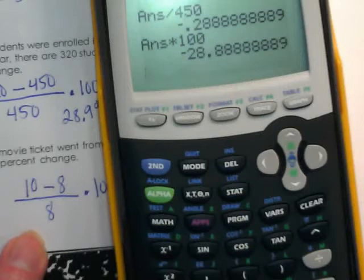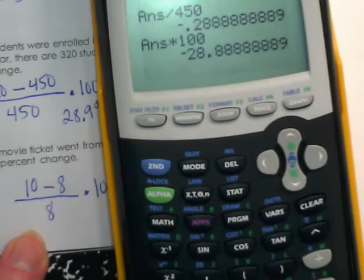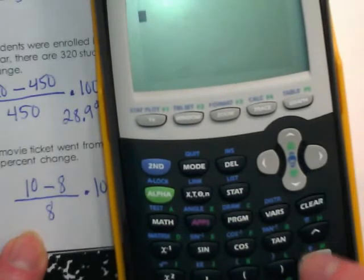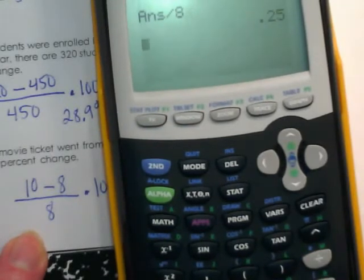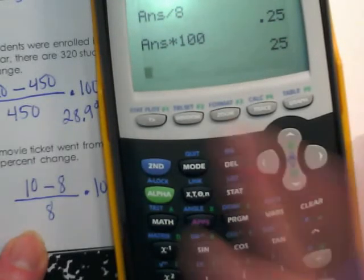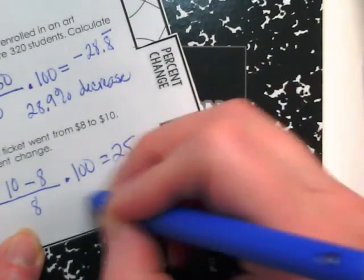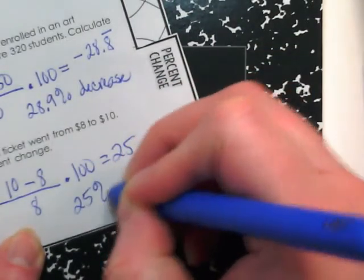What is ten minus eight? Two. What is two divided by eight? One-fourth. What's one-fourth as a decimal? 0.25, it's going to be 25 percent. So ten minus eight divided by eight times one hundred equals twenty-five percent. So this is a twenty-five percent increase.